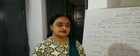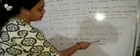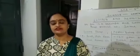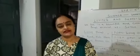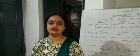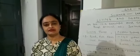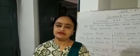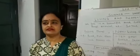Next, living things grow. All living things grow with time. A child grows into an adult. A young animal grows slowly into an adult. A baby plant grows with time into a big tree. Whereas non-living things do not grow.